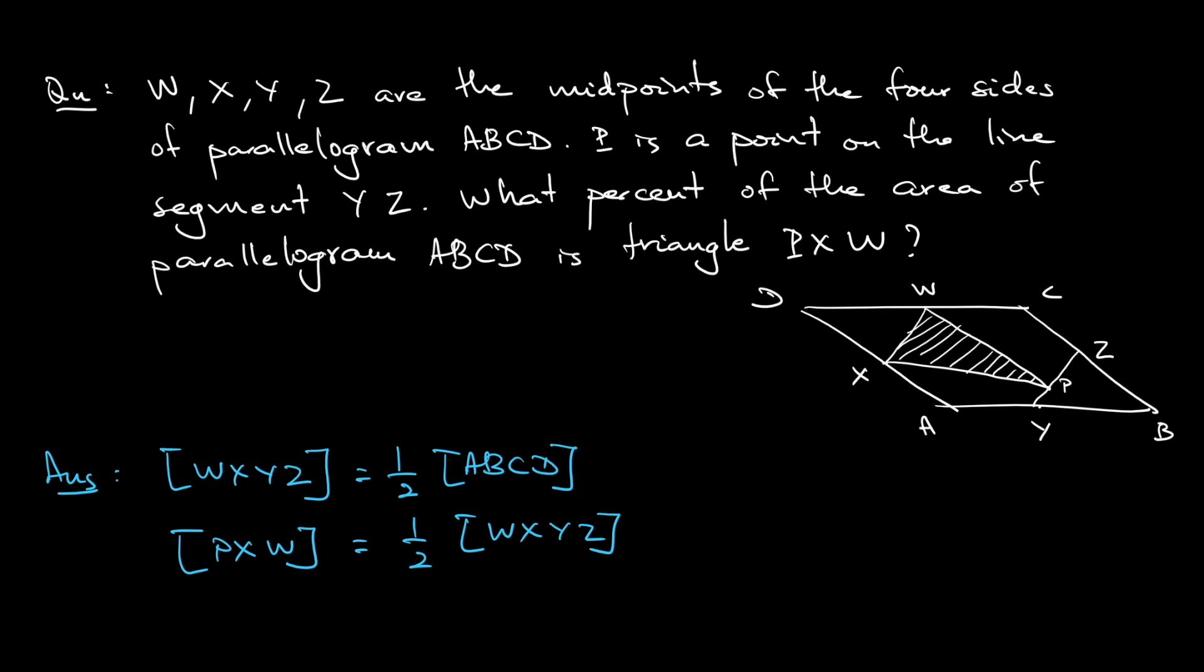So using these two observations, in fact, the area of PXW will be one quarter of the area of ABCD. Alright, so in fact the answer will be 25 percent. Hence, 25 percent.